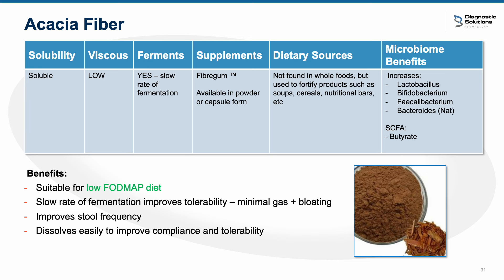Acacia fiber is suitable for a low FODMAP diet. It is a soluble fiber with low viscosity and a slow rate of fermentation, which helps improve tolerability and minimizes gas and bloating. Supplements include acacia fiber or fiber gum. It's not found in whole foods but can be used to fortify products. Microbiome benefits include increasing Lactobacillus, Bifidobacterium, and Faecalibacterium. There are some improvements seen with stool frequency, and it dissolves easily, which helps improve compliance and tolerability.